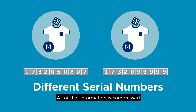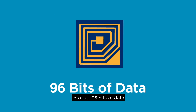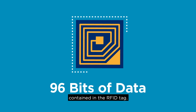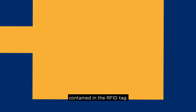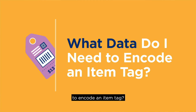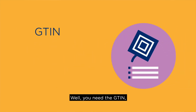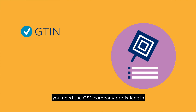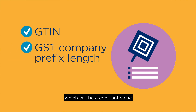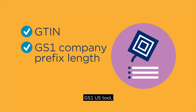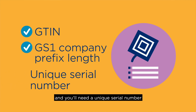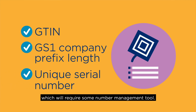All of that information is compressed into just 96 bits of data contained in the RFID tag. So what data do you need to encode an item tag? You need the GTIN, which is based on the UPC. You need the company code, which will be a constant value that can be easily looked up using the free GEPIR GS1 US tool, and you will need a unique serial number, which will require some number management tool.